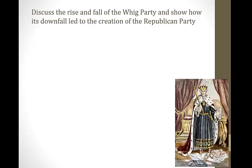In this learning objective — learning objective five — we're going to discuss the rise and the fall of the Whig Party and show how its downfall led to the creation of the modern-day Republican Party. The controversies that revolved around Andrew Jackson stimulated the formation of the Second American Party system.